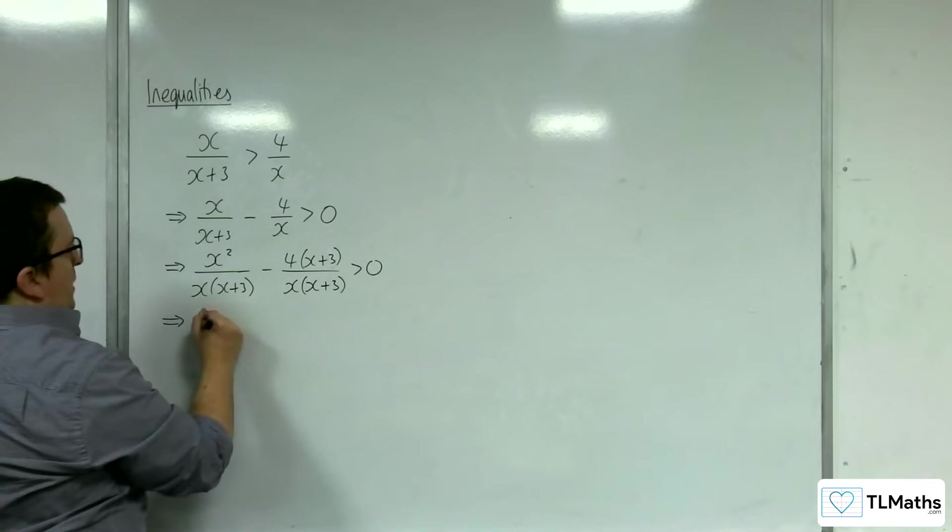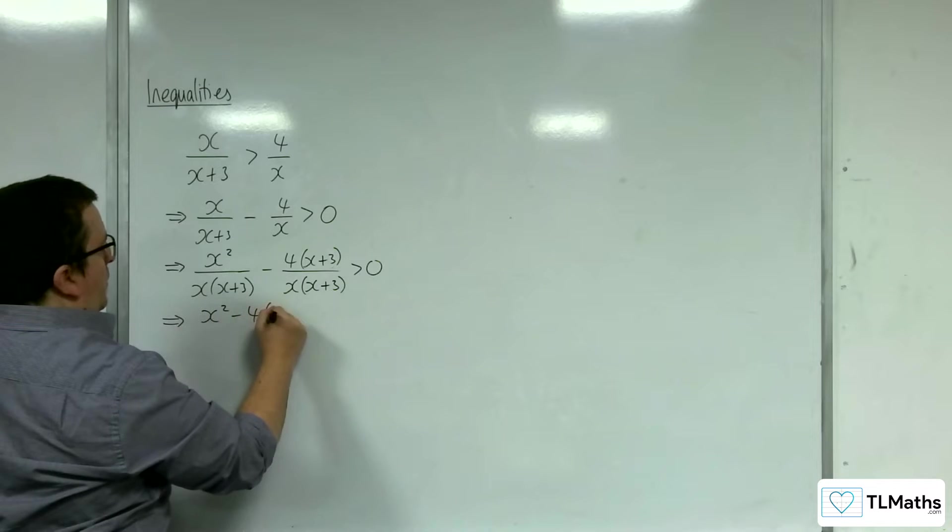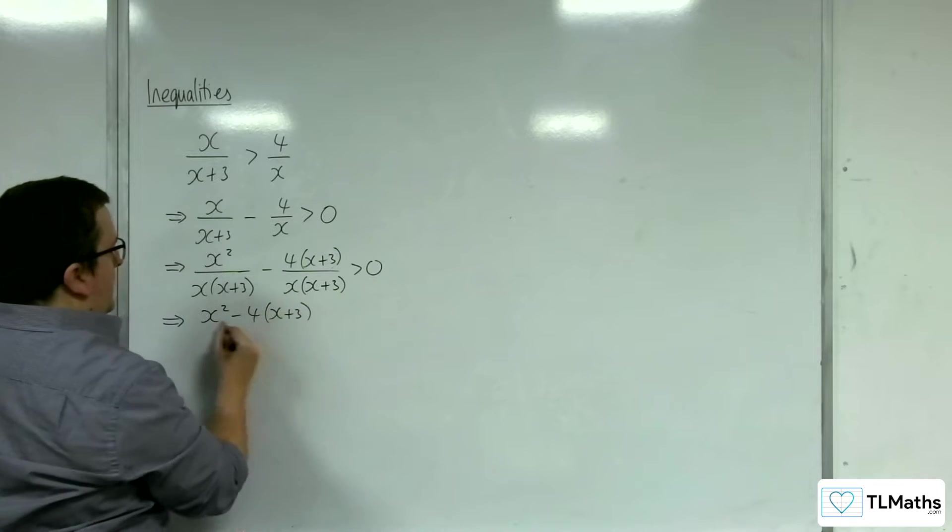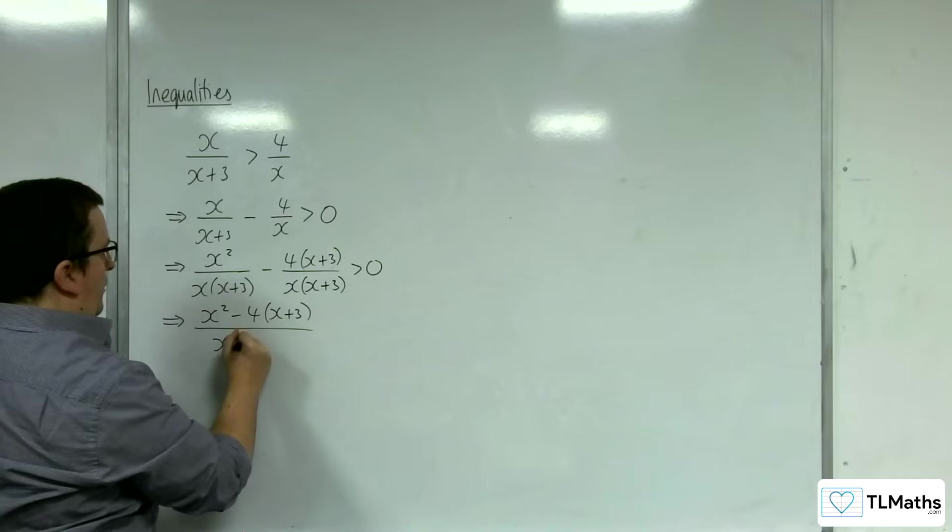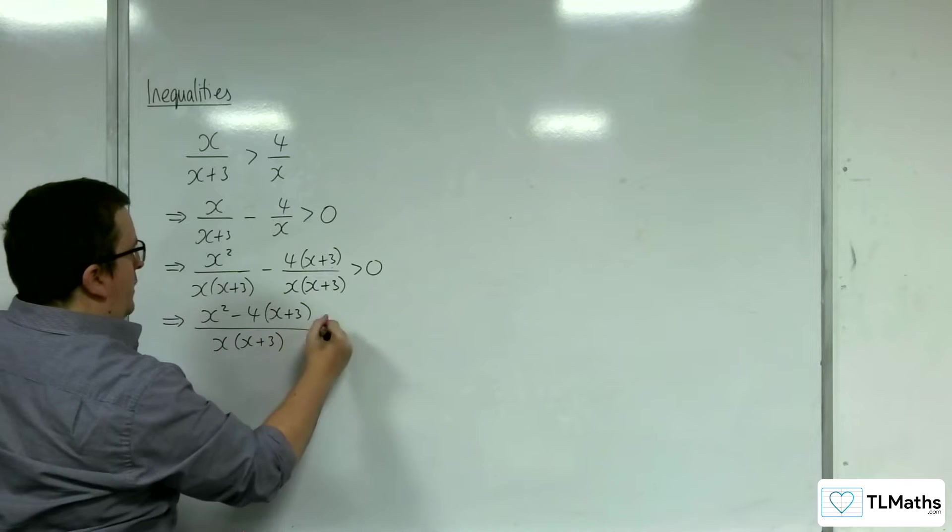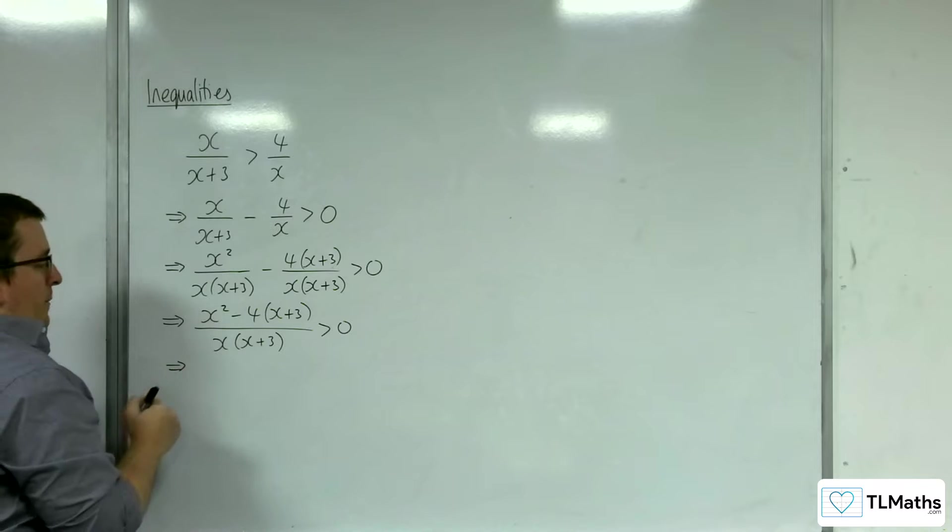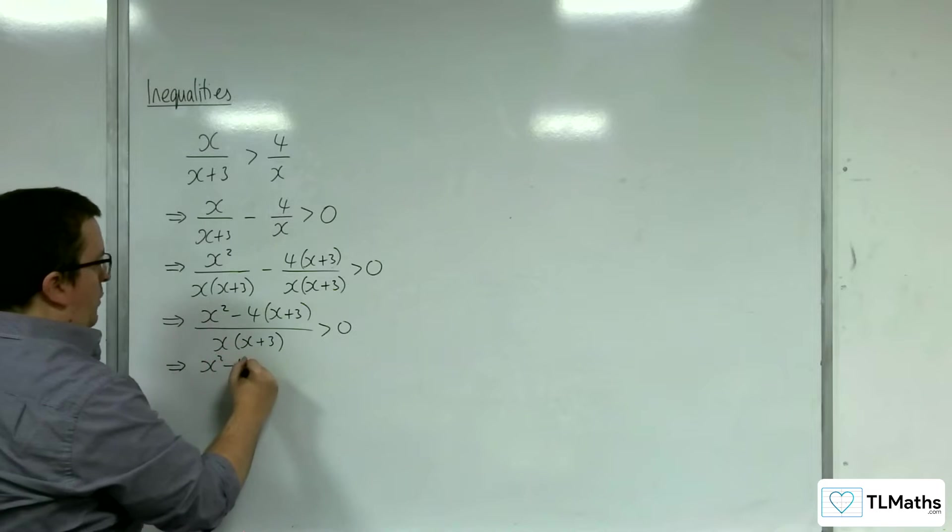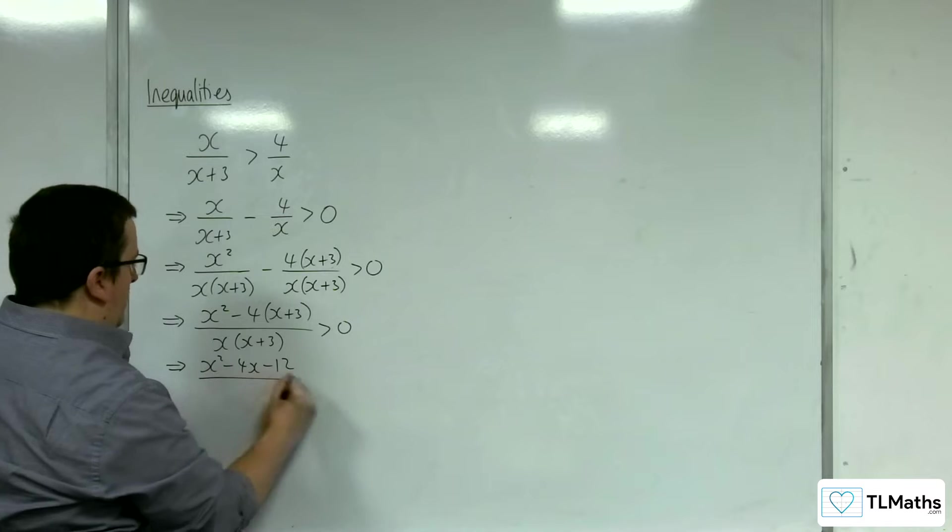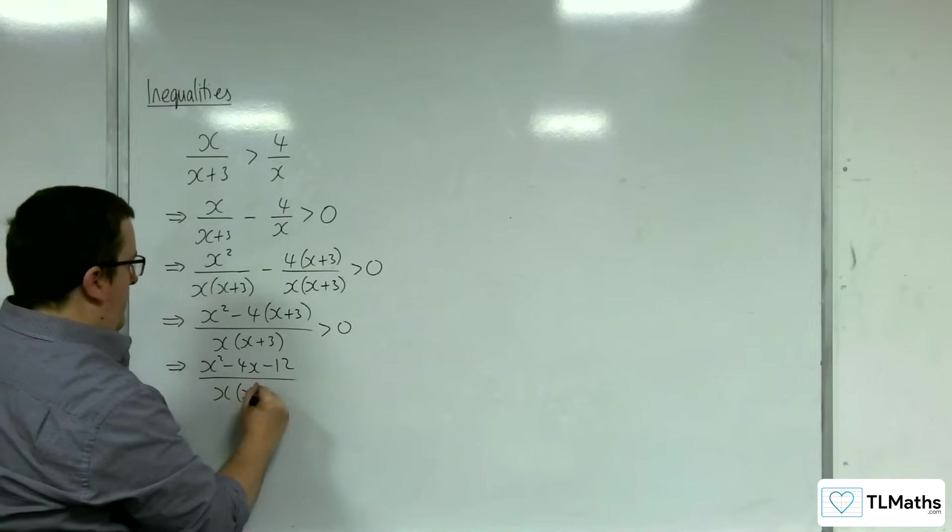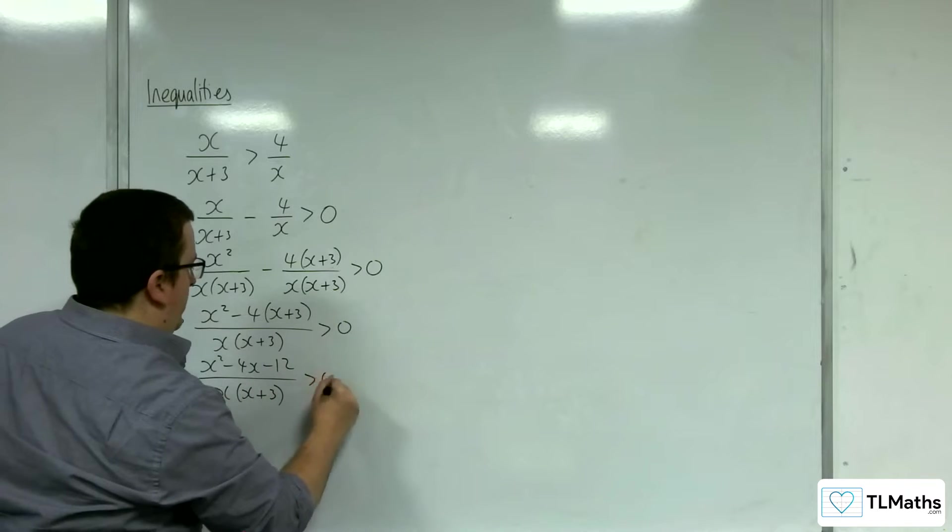So then in the numerator we've got x squared take away 4 lots of x plus 3 over x x plus 3. I'm going to leave that factorised. The numerator becomes x squared take away 4x take away 12 over x x plus 3, which is greater than 0.